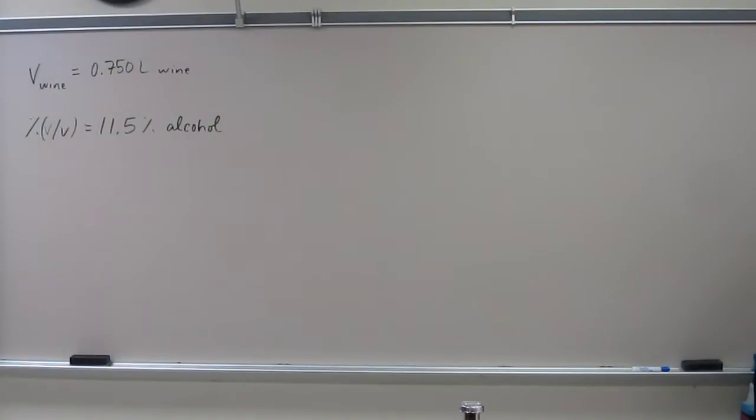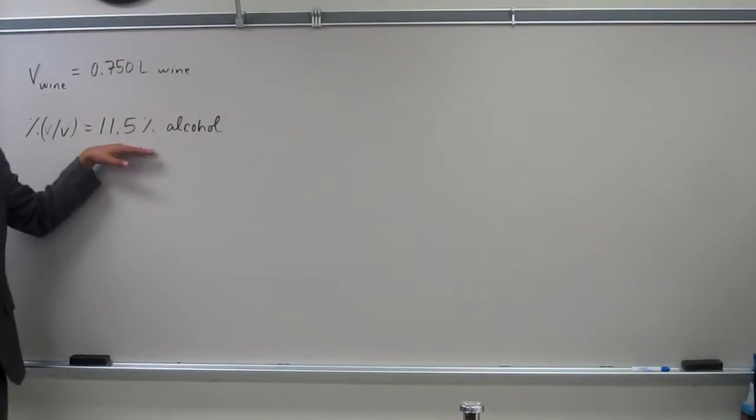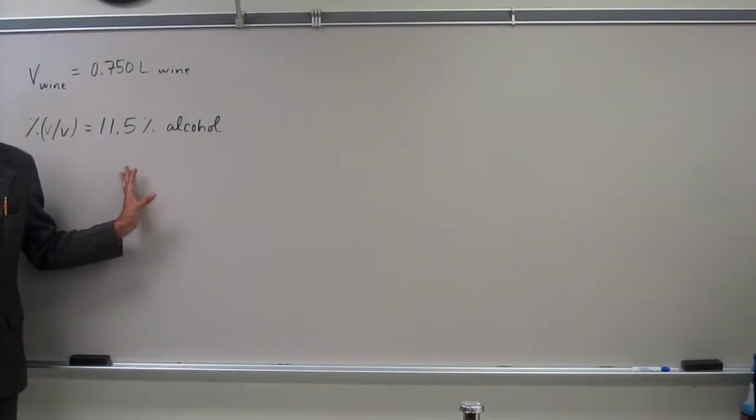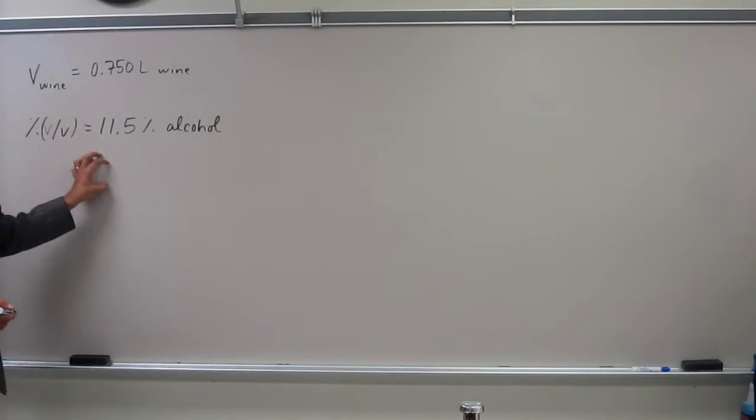So the stuff that's given to you in the problem is up there. Let's assume that this 11.5% here is in 100 liters of the wine. That would make our lives a lot easier. So, if I've got 100 liters of wine, 11.5 liters of those liters are going to be alcohol. Does everybody understand what I'm saying?